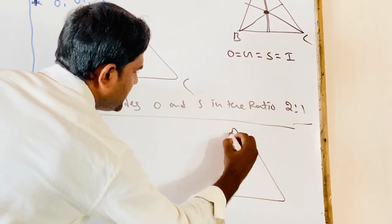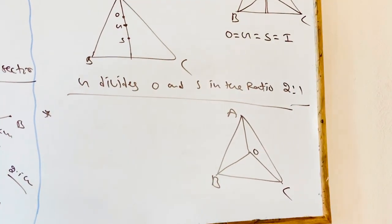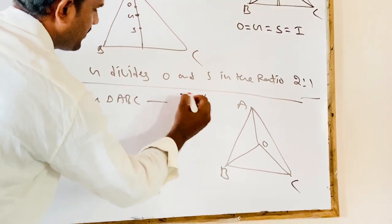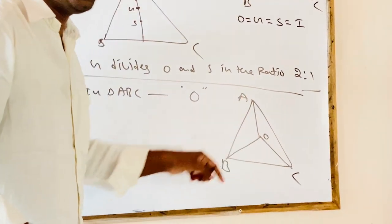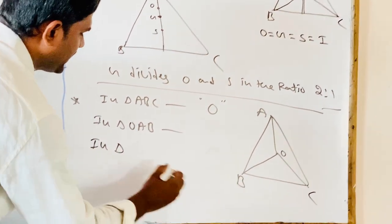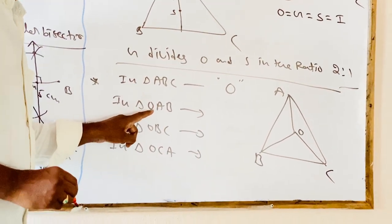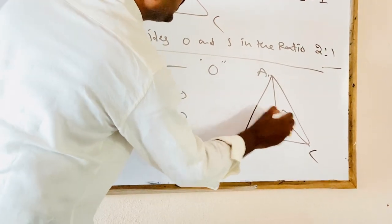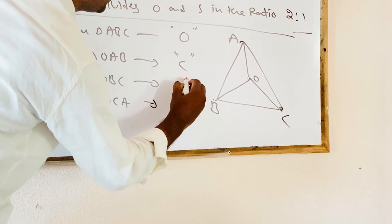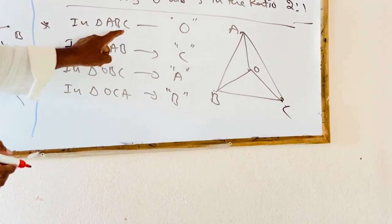Finally, if ABC is a triangle and O is the ortho center, by joining O to A, B, and C we get three smaller triangles: OAB, OBC, and OCA. The ortho center of triangle OAB is the vertex C. If we know triangle OBC, its ortho center is A. And for triangle OCA, the ortho center is B. So by using the coordinates we can find the ortho centers of the smaller triangles also.